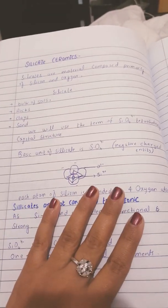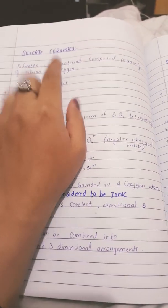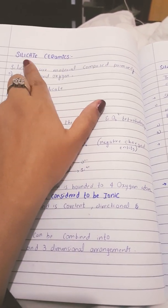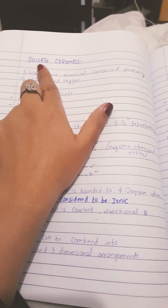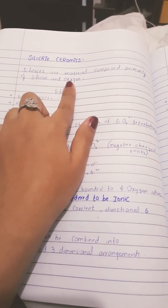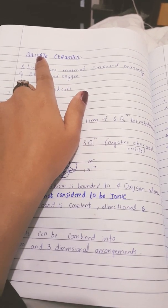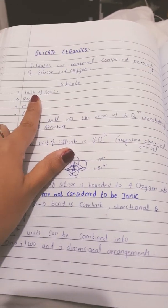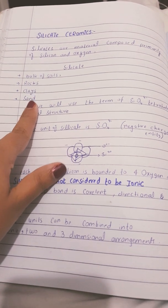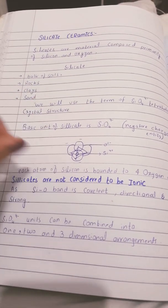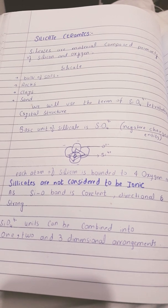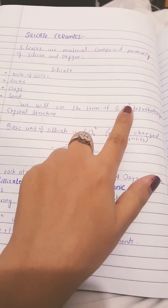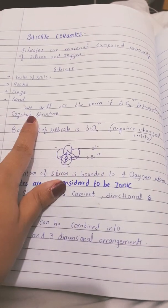Bismillahirrahmanirrahim — today I'm starting my lecture with the name of Allah. Here we are going to discuss silicate ceramics. Silicate is the material that is made up of silicon and oxygen. The basic unit of silicate is SiO4. Silicate is found in nature in the form of soils, rocks, clays, and sand. We will use the term SiO4 negative tetrahedron for the crystal structure of silicate ceramics.